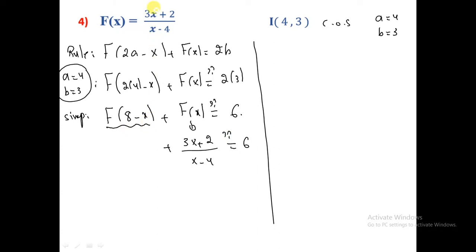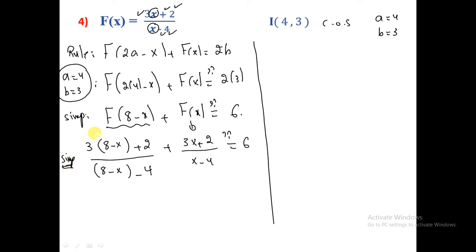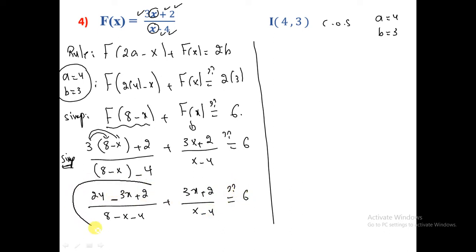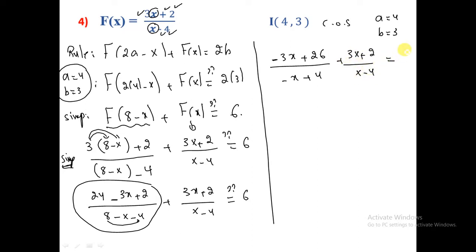So f(8-x) = (3(8-x)+2)/((8-x)-4). The numerator: 3×8 = 24, minus 3x, plus 2 gives (-3x+26). The denominator: 8-x-4 gives (-x+4). So we have (-3x+26)/(-x+4) + (3x+2)/(x-4) = 6. The denominators differ in sign only.